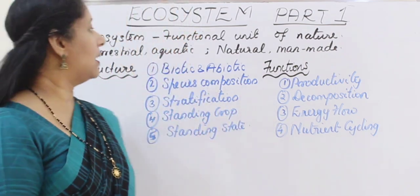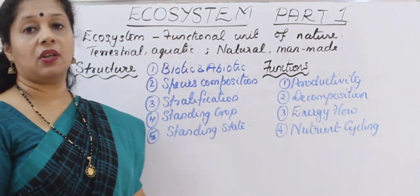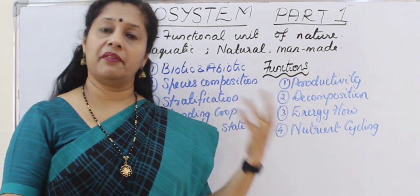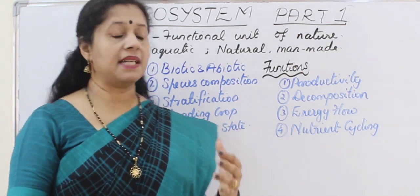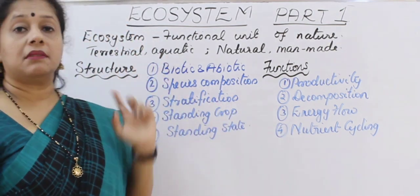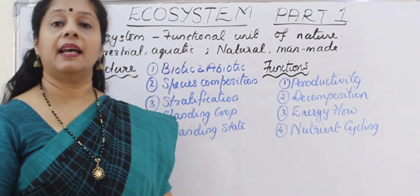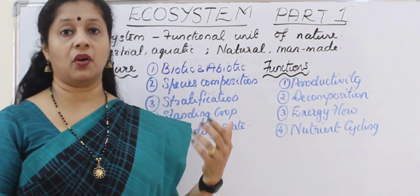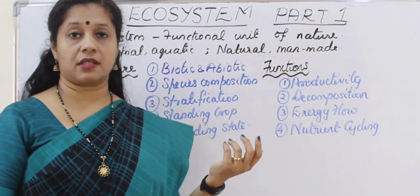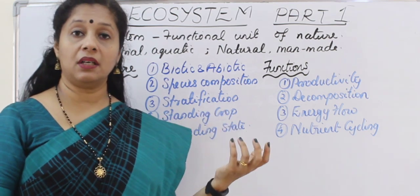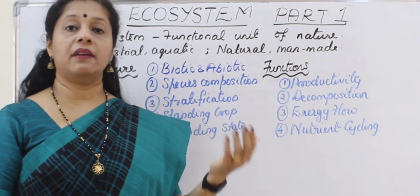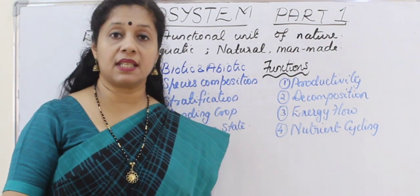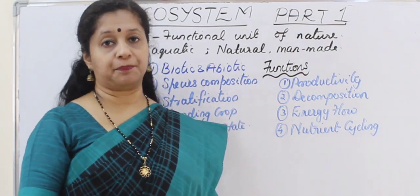When we talk about the different types of ecosystem on this earth, we classify them on different bases. One basis is terrestrial and aquatic ecosystems. If you see deserts, grassland, or forest, these are all terrestrial ecosystems. But if you see pond, lake, river, ocean — all these are aquatic ecosystems.